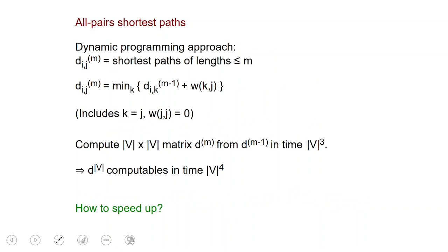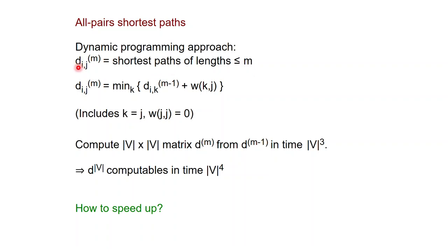The first algorithm that we see is a fairly natural dynamic programming approach to this problem. We are going to denote by D superscript M the V by V matrix that contains all the shortest paths of length at most M between any two nodes I and J in the graph. What we want is D superscript N, the number of nodes, because any shortest path has length at most N. These are our subproblems and we can give a recursion for this matrix.